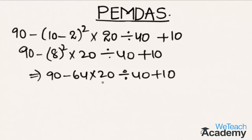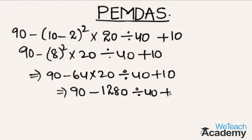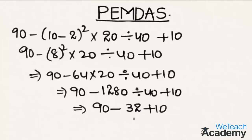The next step is to multiply. We get 90 minus 1280 divided by 40 plus 10. Multiplication is finished. Then the next step is to divide. Dividing, 1280 divided by 40 is 32, so we get 90 minus 32 plus 10.